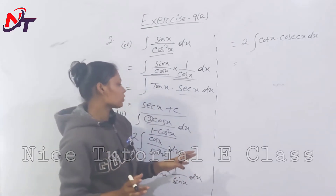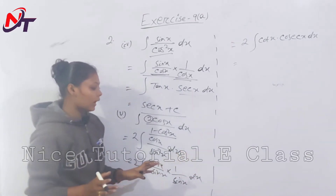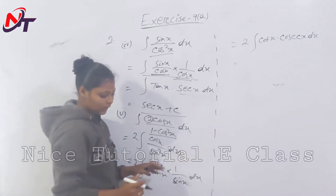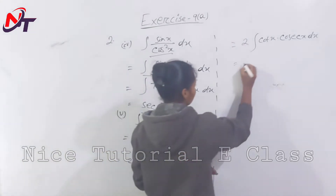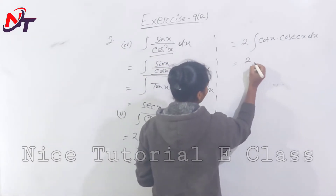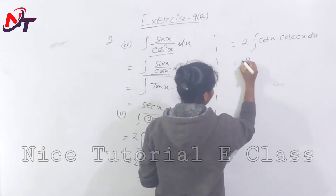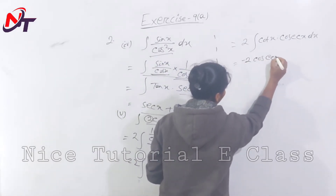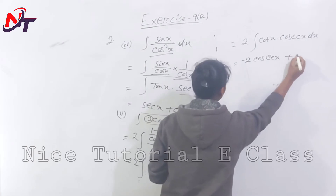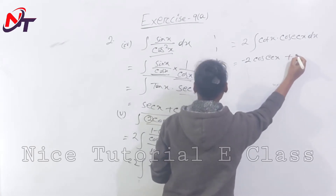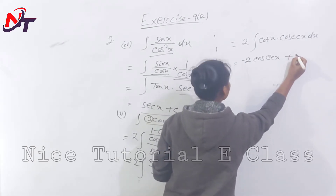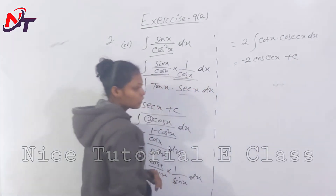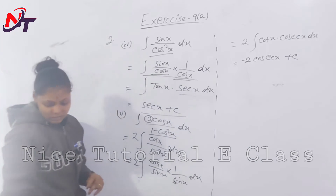Using the formula, integration of cot x cosec x dx equals minus cosec x plus c. With the constant 2 outside, the answer is minus 2 cosec x plus c.